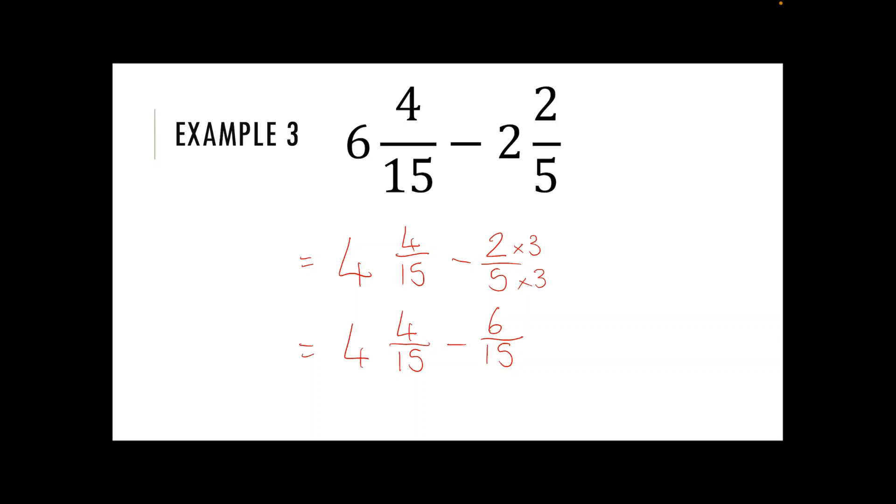So what I would do is take one whole number out of my whole four here so I can subtract one whole number and my one is really going to be equal to 15 over 15. So what I'm really going to do is if I'm taking away 15 over 15 from my four, I'm adding the 15 onto the four on the top of my fraction.